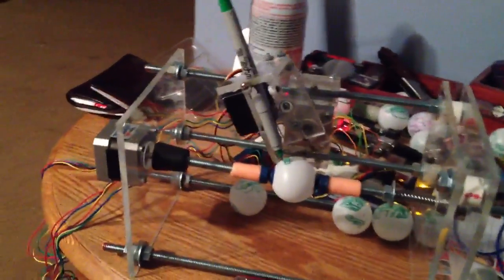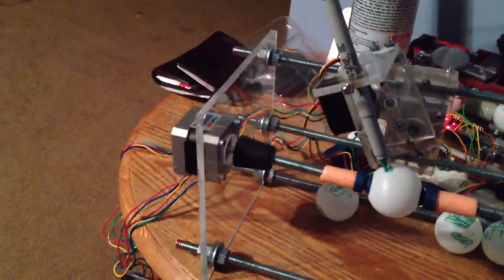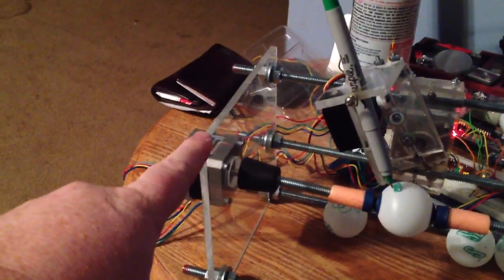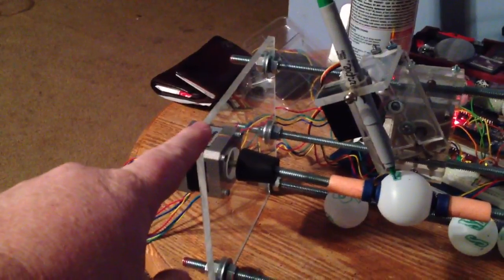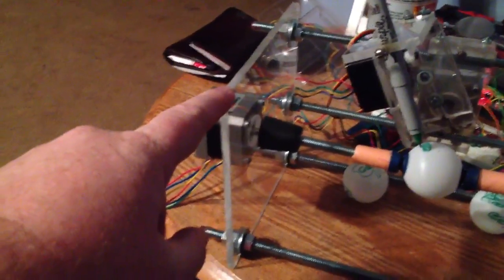SpearBot log number two. I made some changes since last time. I cut bigger side walls. I went up to fifteen centimeters from the original ten centimeters on the plan I was looking at.